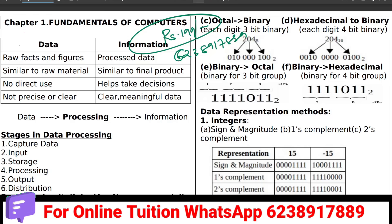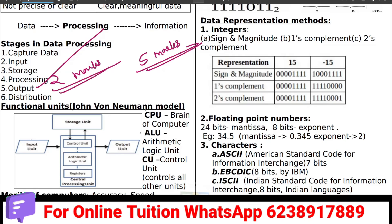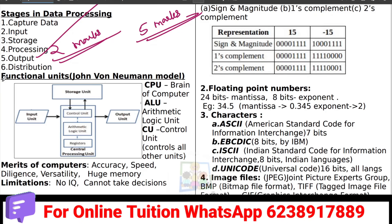So we will learn more about the control statements. In the first chapter, there is a question about the fundamentals of computers — it is a very important question. There is a difference between data and information. We will know a few facts about data and information and numbers.